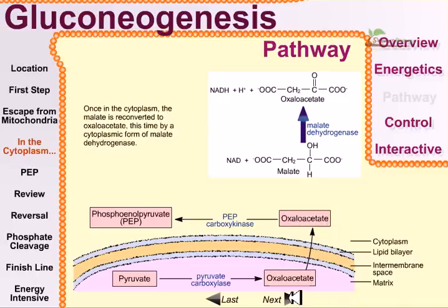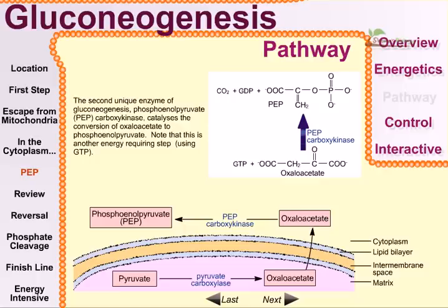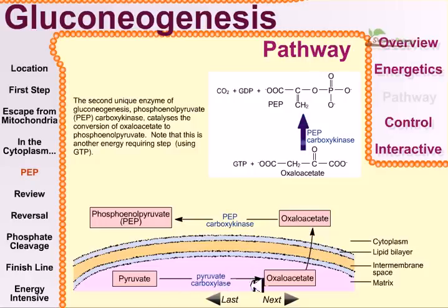Once oxaloacetate is in the cytoplasm, it is converted into phosphoenolpyruvate. The second unique enzyme of gluconeogenesis, PEP carboxykinase, catalyzes this conversion. This is another energy-requiring step. A correction here: pyruvate carboxylase is actually adding an extra carbon to pyruvate to form oxaloacetate (carboxylation), while PEP carboxykinase cleaves off that carbon dioxide (decarboxylation). PEP carboxykinase also requires GTP hydrolysis as its energy source.